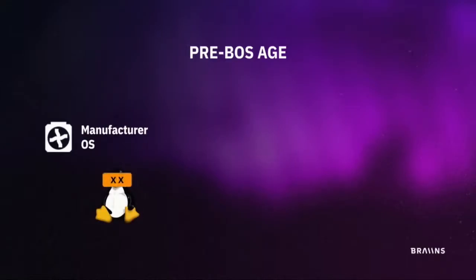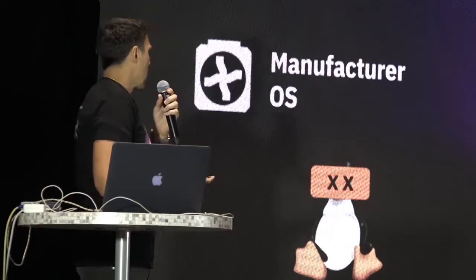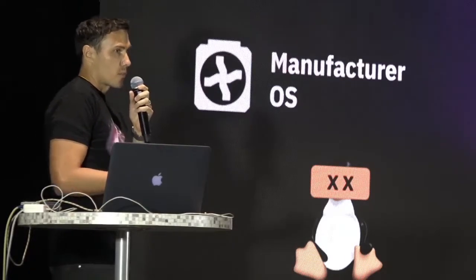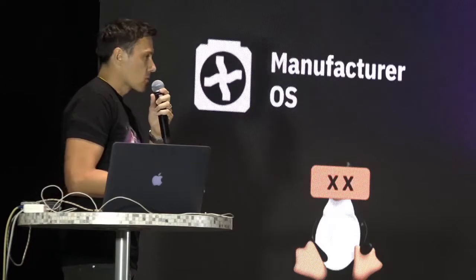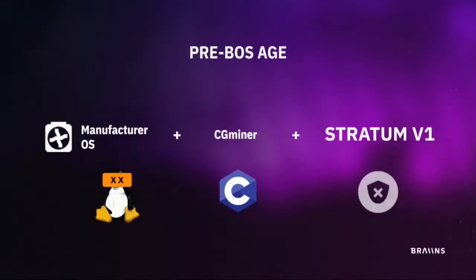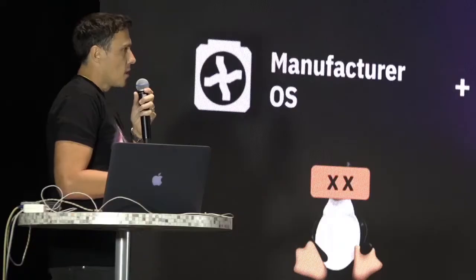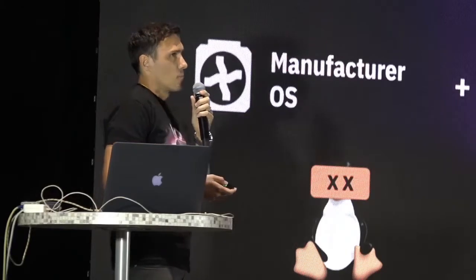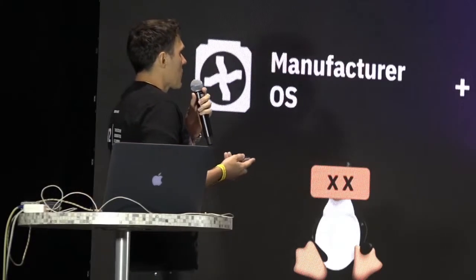Before we had the BrainsOS initiative, every device was running some manufacturer-modified operating system, usually tailored from Linux. Intentionally the image was a little bit crippled and may have contained backdoors, like the nbleed affair we had. They were also using CG Miner software to perform the actual mining. The first open source problem here was that the CG Miner software was not usually being contributed back to the community — so it's a violation of the GPL. Most manufacturers don't care, but that's how it is.